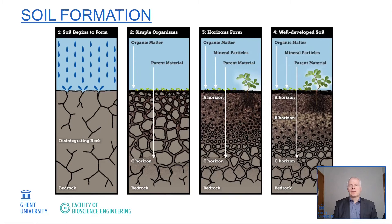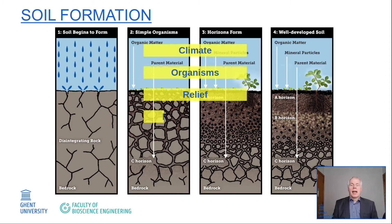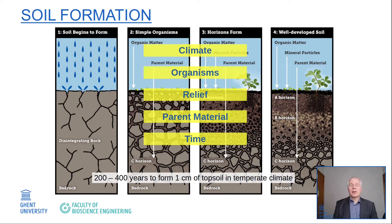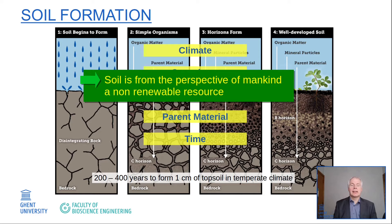Soil is formed over 100,000 years and longer from parent bedrock until it forms a well-developed soil profile. In that long natural process, five factors determine how a certain soil will develop. It is a slow process and it takes about 200 to 400 years to form one centimeter of topsoil in the temperate climate. So from the perspective of mankind, soil is to be considered as a non-renewable resource.